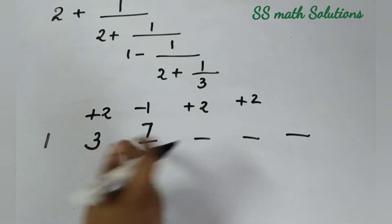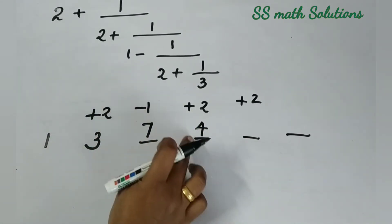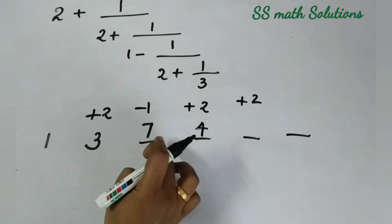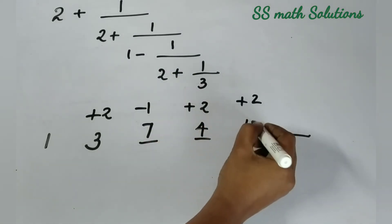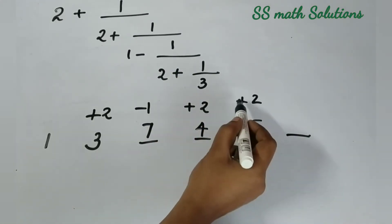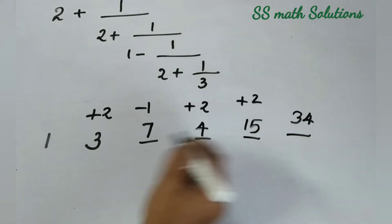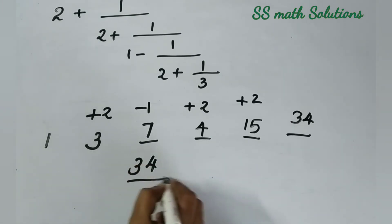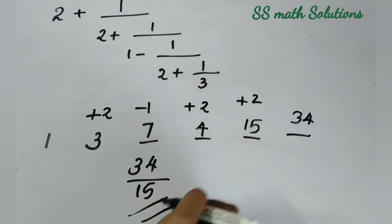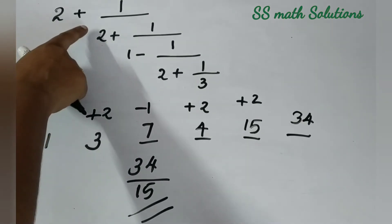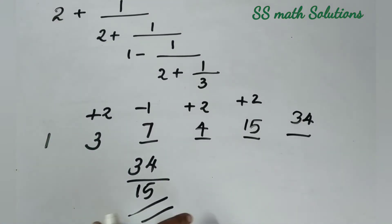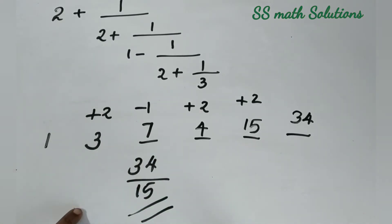Now 3 into 2 is 6, plus 1 is 7. Then 7 into 1 is 7, minus 3 is 4. Then 4 into 2 is 8, plus 7 is 15. One more: 15 into 2 is 30, plus 4 is 34. So we got our answer. No need to reciprocate this one. The answer is 34 divided by 15.